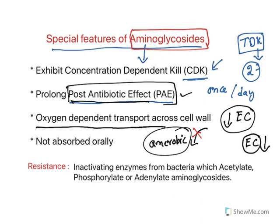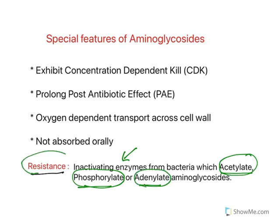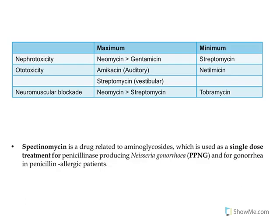Aminoglycosides have many amine groups and ionic charges, so they cannot be orally absorbed. When aminoglycosides are continuously given, bacteria develop resistance. The pattern of resistance is that bacteria release certain inactivating enzymes which acetylate, phosphorylate, or adenylate aminoglycosides, giving them dysfunctional groups that cannot bind with the protein synthesis machinery of bacteria.